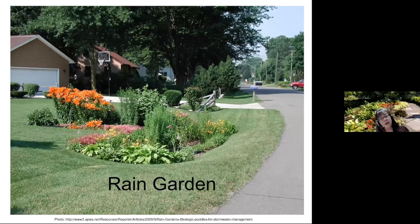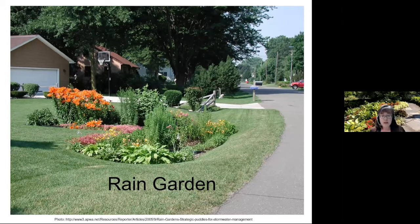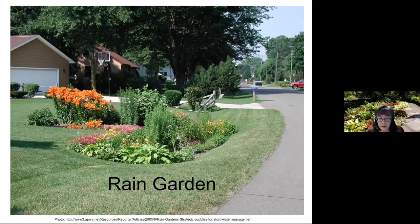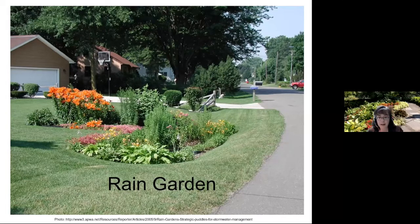A rain garden is a bioretention basin — a basin in the landscape to collect stormwater runoff. We want to keep water on the property, avoid overloading the stormwater system, and keep pollutants in place. When rain falls on impervious surfaces like buildings, sidewalks, driveways, streets, and parking lots, it goes into the stormwater system instead of infiltrating the ground. We want it to infiltrate and keep pollutants out of our lakes and rivers.